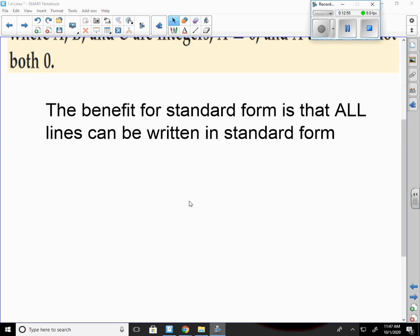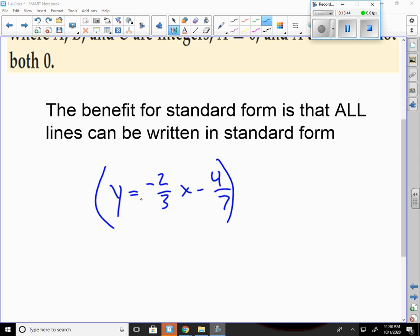The benefit for standard form is that every line could be written in standard form if we wanted to. So even if I have a line, say, if I started with a line in slope-intercept form that says y equals negative two-thirds x minus four-sevenths. Standard form says everything has to be whole numbers. Which means that I would just multiply this entire thing by my denominators. So I can multiply this by twenty-one.